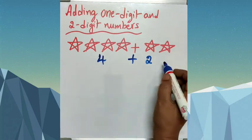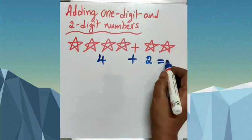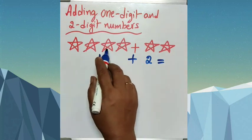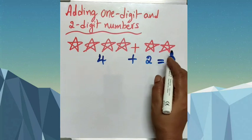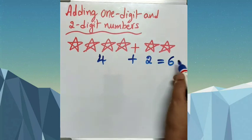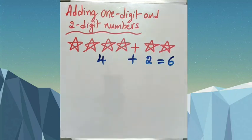So total stars, how many are there? 1, 2, 3, 4, 5, 6. Total stars are 6. We have 6 stars in all, or altogether we have 6 stars.